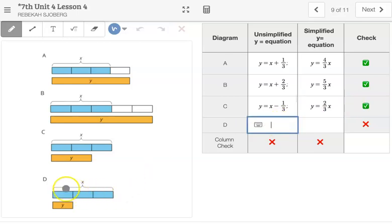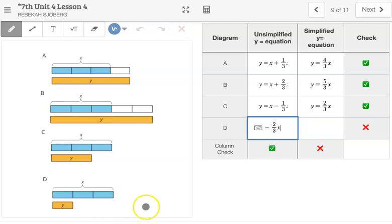And then for the final one, we started with the full X, but 2 thirds of them are missing. So Y equals X minus 2 thirds X. And what's left there, we just have Y equals 1 third X.